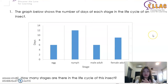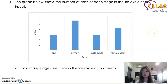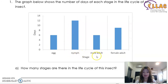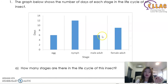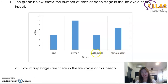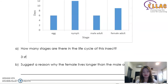Graph questions are very common in the life cycle topic. For example: a graph shows the number of days at each stage — six days as an egg, twelve days as a nymph, six days as a male adult, and ten days as a female adult. How many stages are there? This is a trick question — male adult and female adult count as one adult stage, not two. So: egg, nymph, and adult equals three stages. The answer is three stages.